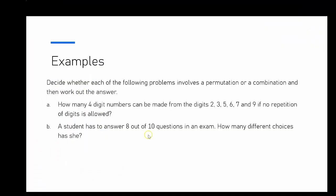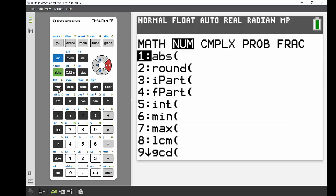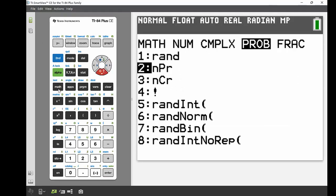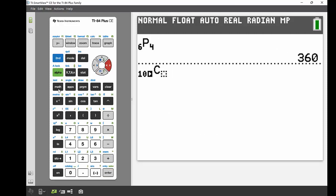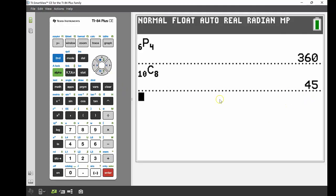The second example: a student has to answer 8 out of 10 questions in an exam — how many choices does she have altogether? In this case, it doesn't matter which 8 of those 10 questions she answers, so the order is not important. We're looking at a combination. Going into the maths menu across to probability, I use NCR — 10 options, picking 8 — giving 45 different combinations.